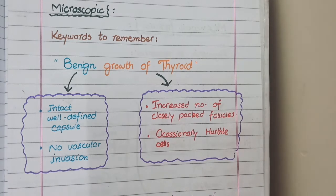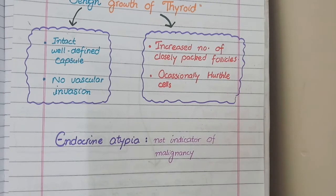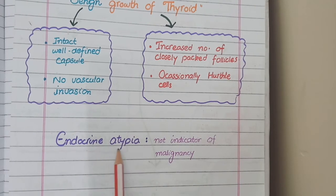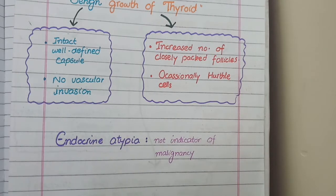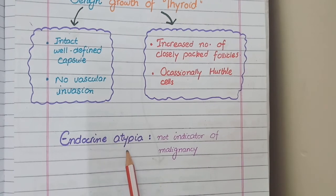Occasionally, thyroid adenoma can also contain intensely eosinophilic Hurthle cells, as studied in Hashimoto's thyroiditis. Importantly, endocrine atypia — the presence of atypical cells — is a feature of benign endocrine adenomas. Unlike in non-endocrine organs where atypia may suggest malignancy, in follicular adenoma atypical cells do not indicate follicular carcinoma.